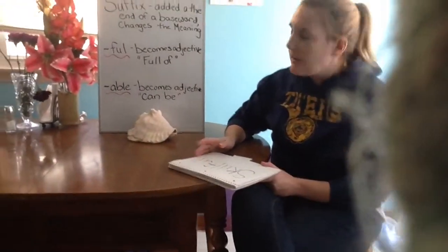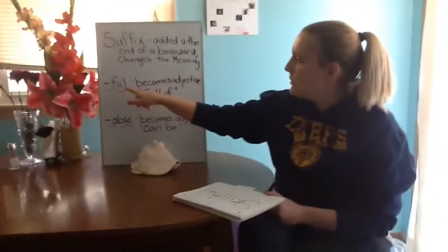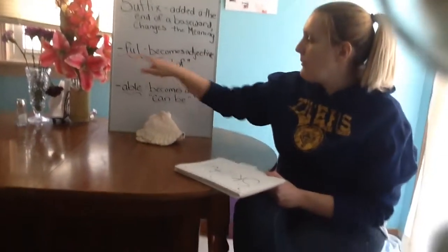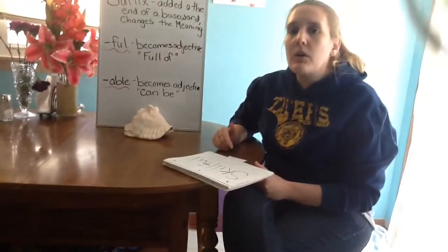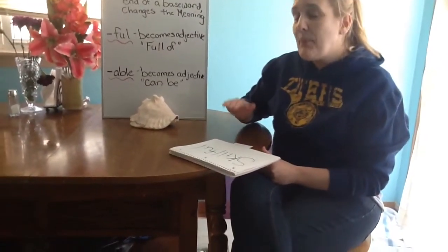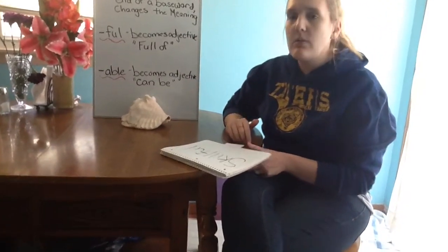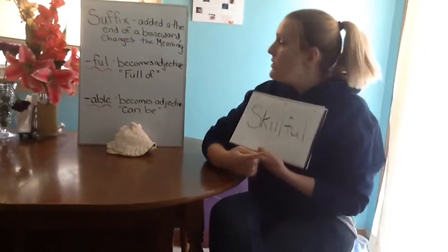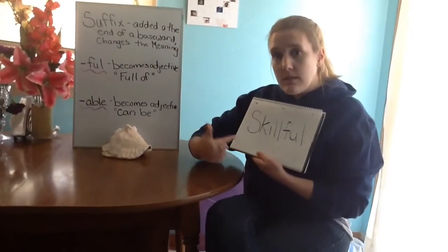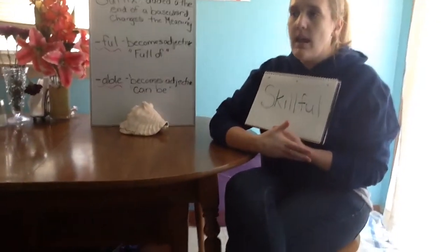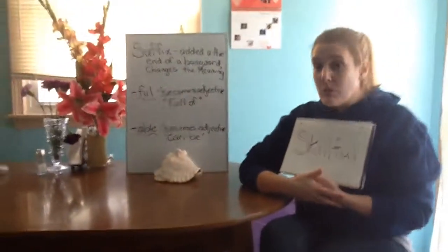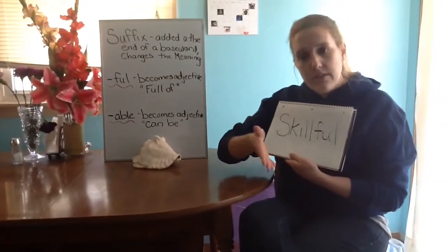First let's look at the suffix 'full'. If you add 'full' to a word, that word becomes an adjective. 'Full' means 'full of'. So let's look at the word 'skill'. If I put 'full' at the end of 'skill', I get the word 'skillful', and it becomes an adjective. I can use 'skillful' to describe something — for example, 'that is a skillful musician', which means he is a musician that is full of skills.